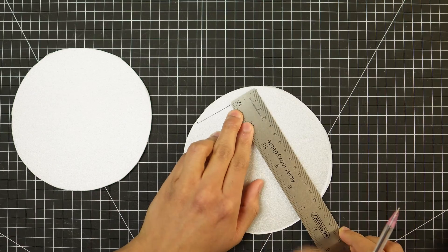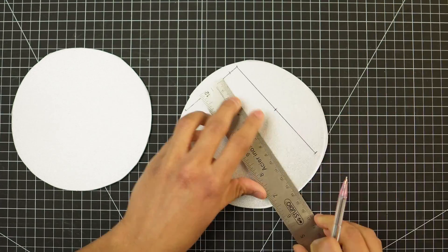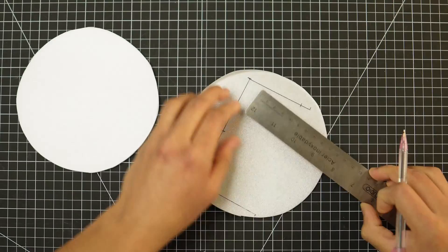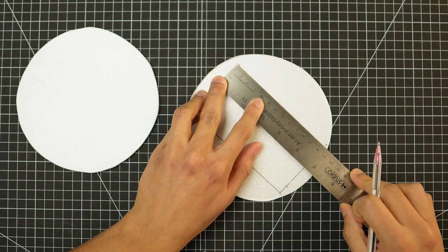Let's now work on the horizontal and vertical stabilizer. Again, the measurements are provided in the description box, so check out the planner.